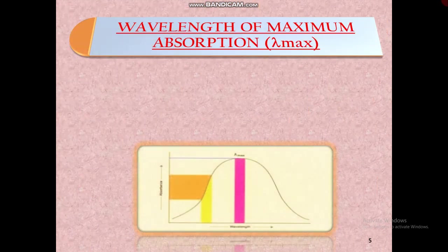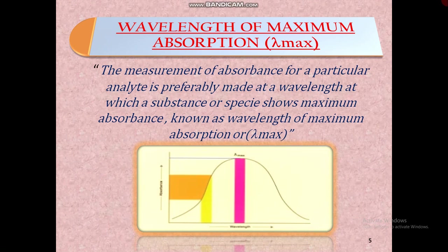Wavelength of maximum absorption is defined as the measurement of absorbance where a particular analyte is preferably made at a wavelength at which a substance or species shows maximum absorbance, known as the wavelength of maximum absorption or lambda max. The graph here represents that absorbance data was collected against numerous wavelength regions. This wavelength represents that the species has absorbed maximum light, which is denoted as lambda max.